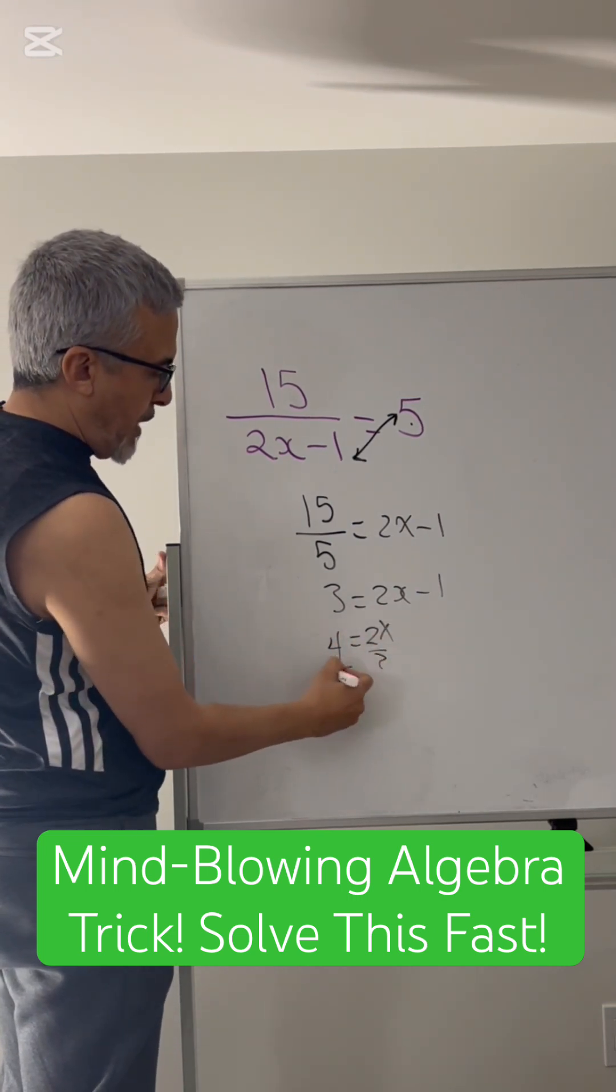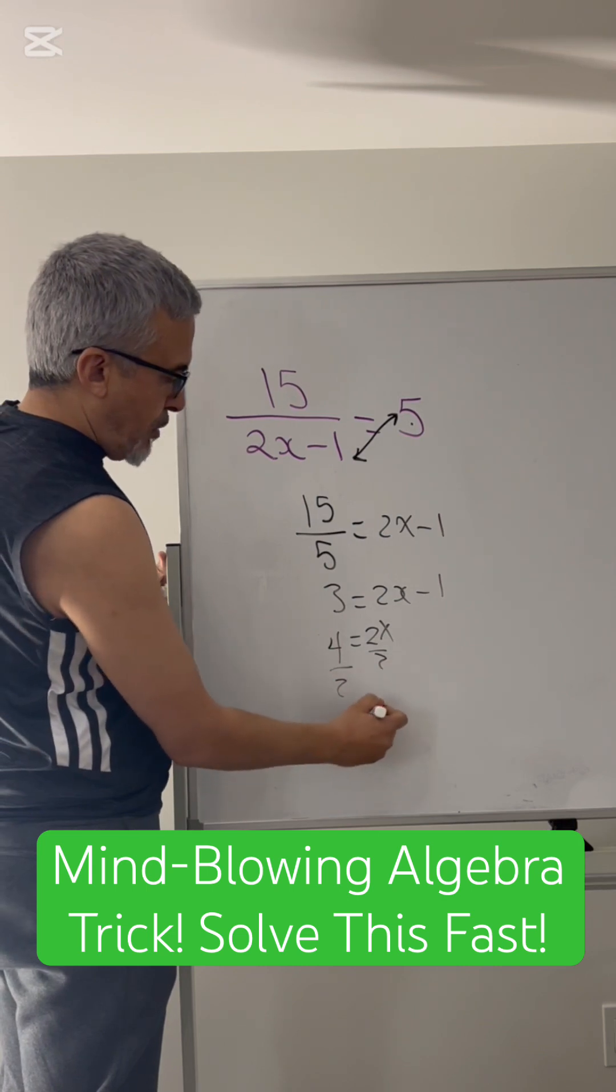And now divide both sides by 2. You get x equals 2.